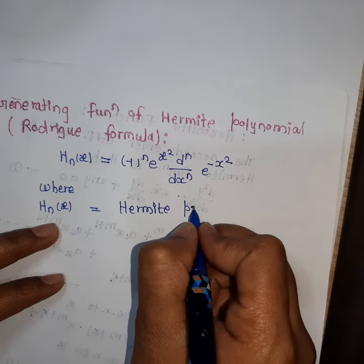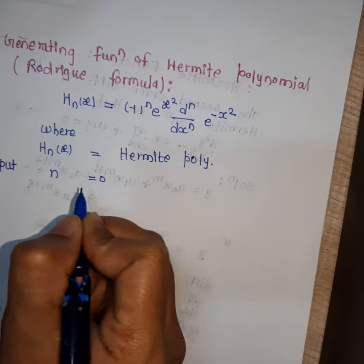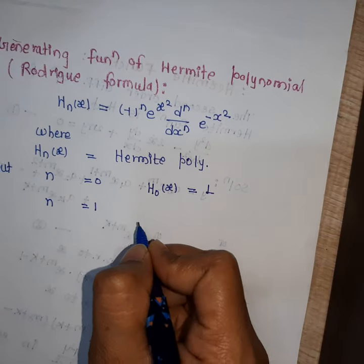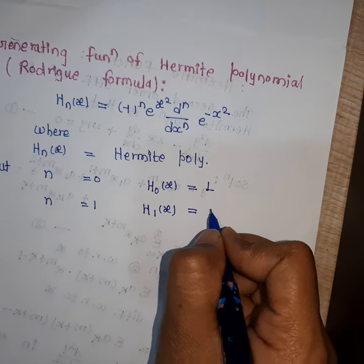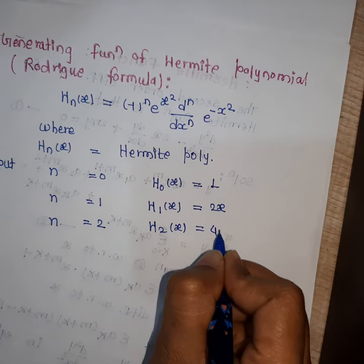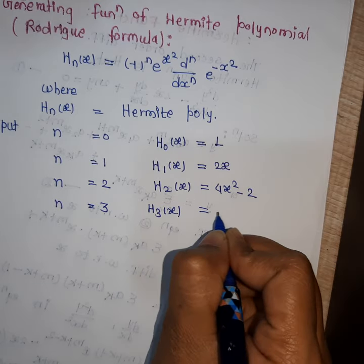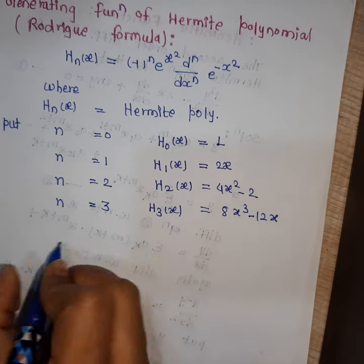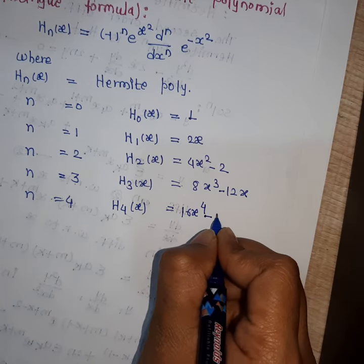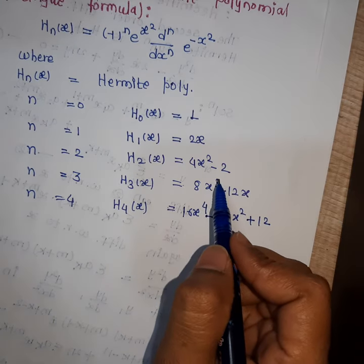From the Rodrigues' formula: H₀(x) = 1; H₁(x) = 2x; H₂(x) = 4x² − 2; H₃(x) = 8x³ − 12x; H₄(x) = 16x⁴ − 48x² + 12. These values are useful for MCQ-type examination questions.